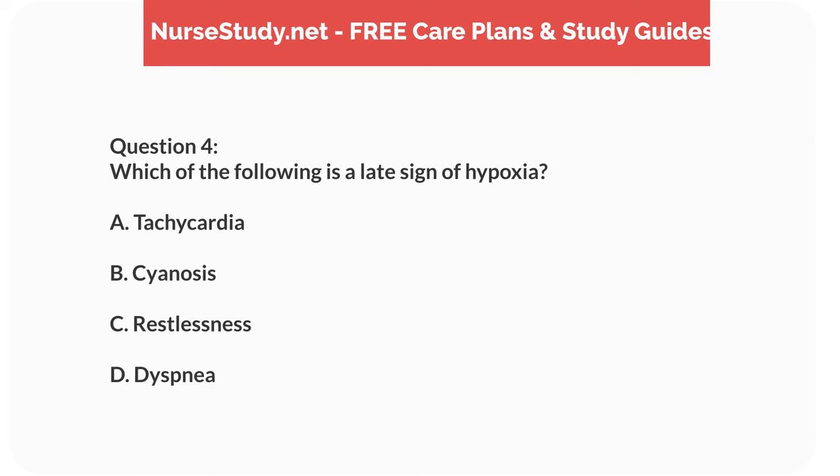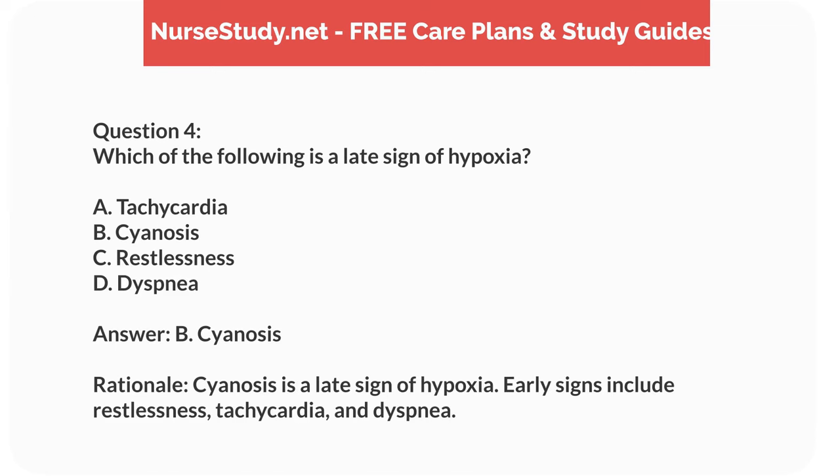Question 4. Which of the following is a late sign of hypoxia? A. Tachycardia. B. Cyanosis. C. Restlessness. D. Dyspnea. Answer: B. Cyanosis. Rationale: Cyanosis is a late sign of hypoxia. Early signs include restlessness, tachycardia, and dyspnea.